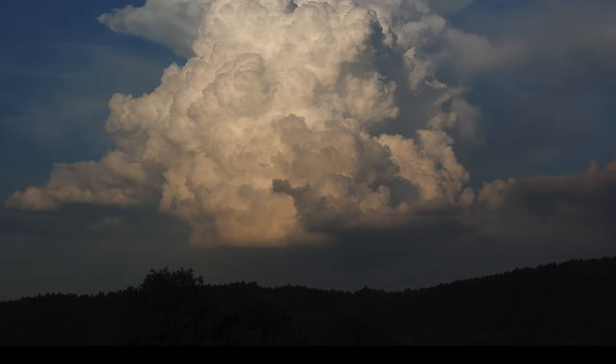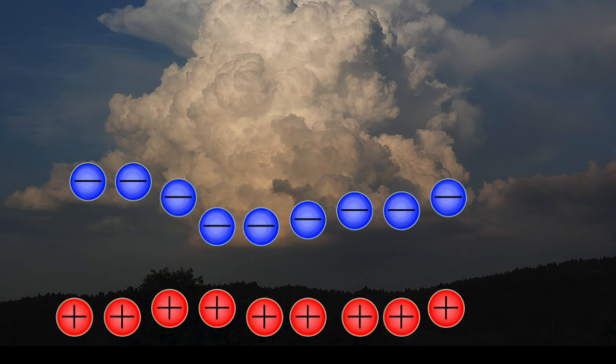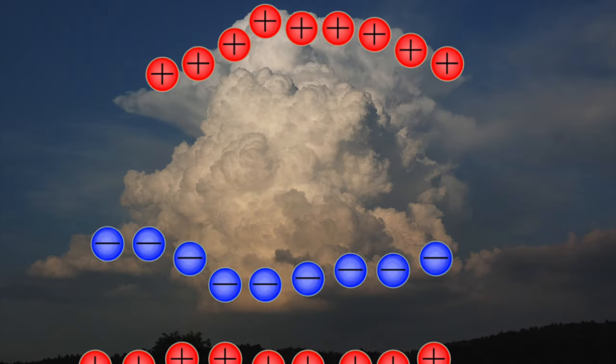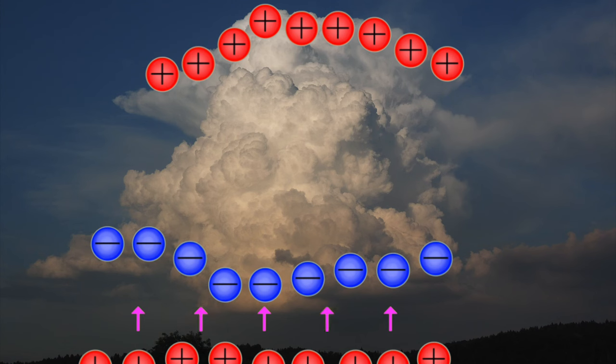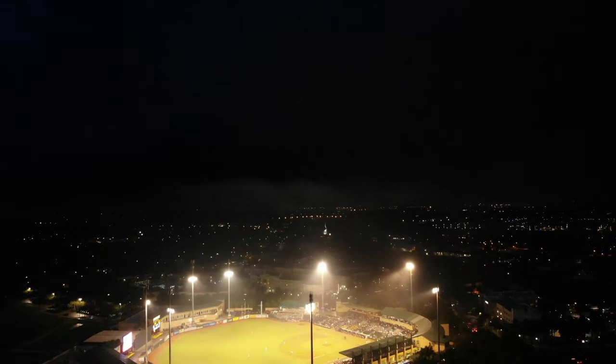Electrical charges begin to build up beneath the cloud as well. Positively charged particles in the ground are brought up to the surface, since they are attracted to the negatively charged base of the cloud. Over time, charged particles in the cloud are separated further and further, and the attractive force between the cloud and the ground becomes stronger and stronger until — eventually — the charge imbalance is too high and neutralization takes place in the form of lightning. A lightning bolt is a stream of charged particles hot enough to turn sand into glass, and the immense energy it carries lights up the night sky and creates a shockwave that we hear as thunder.